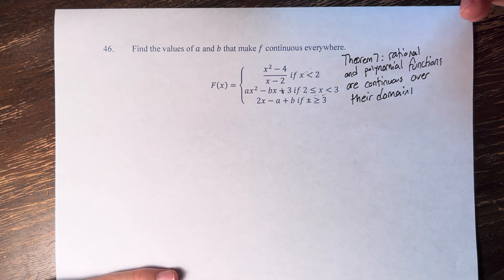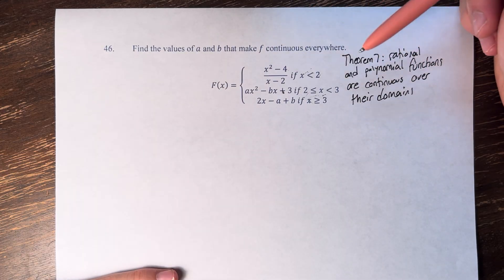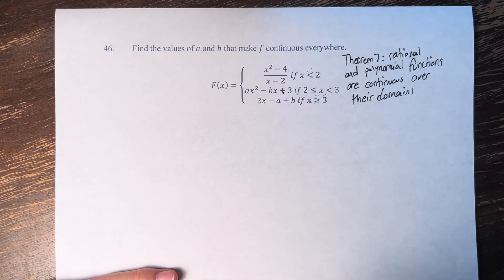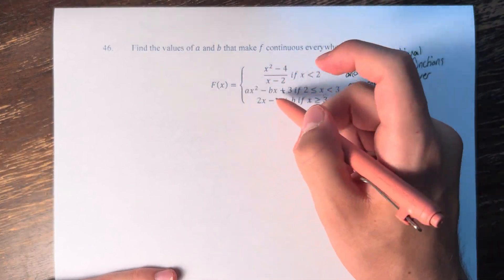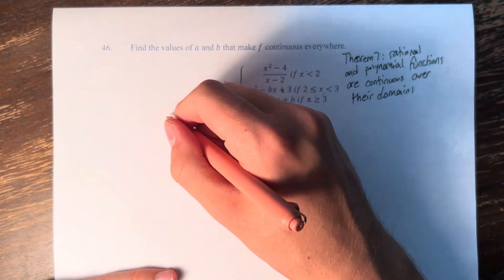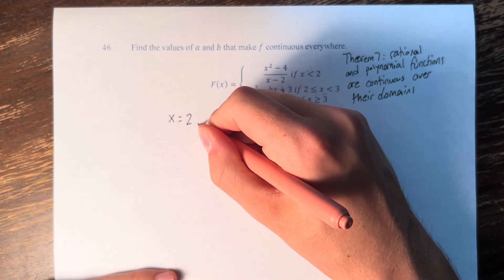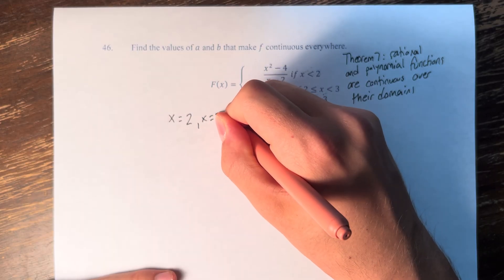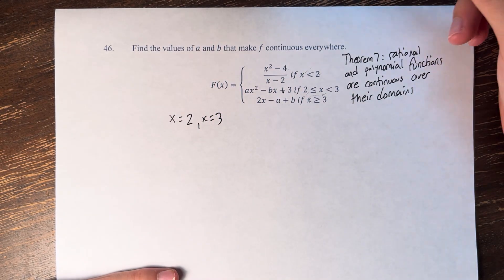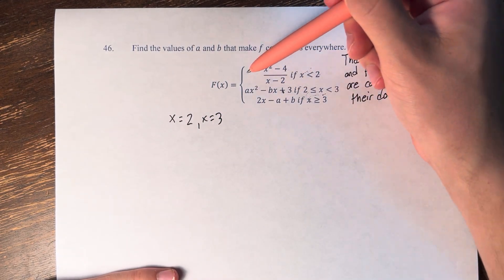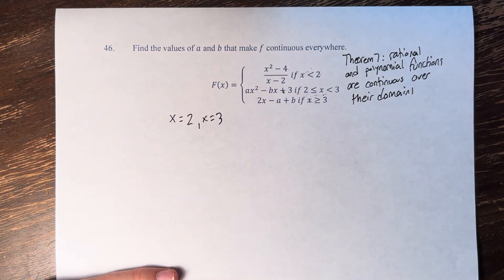So if we want to make f continuous everywhere, all we have to do is pick values of a and b such that it's continuous at x equals 2 and x equals 3, because these are the points where we're jumping from one piece of the piecewise function to the next.